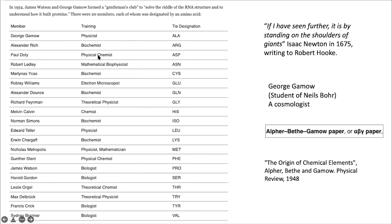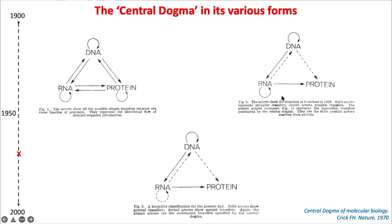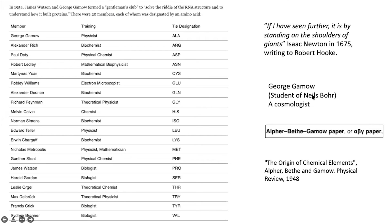George Gamow was a very interesting figure. He was actually a physicist and cosmologist, a student of Niels Bohr. Not everyone in the RNA Tie Club was a biologist — there were many chemists, because biochemistry in those days was the purview of chemists. There was a theoretical chemist like Leslie Orgel, Delbrück was a theoretical physicist who went completely into molecular biology, especially studying bacteriophages, and there were also mathematicians among the members.